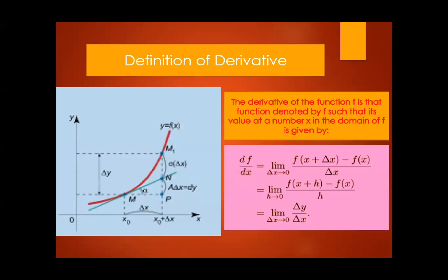So as we recall, the definition of derivative comes from the limit. If we have a first point M to the second point M1, you are going to get the slope. The derivative of a function is denoted by F, such that its value is a number X in the domain of F. If you look at the graph, this is the change of X from point 0.